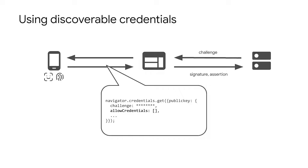To use discoverable credentials, pass an empty allow credentials object on authentication. Earlier, I mentioned you need to pass a list of credential IDs on authentication. As the server cannot predict which authenticator the user will use, you have to send all possible credential IDs. With discoverable credentials, the user can proactively choose the credential that is most suitable to sign in with WebAuthn. This allows the authenticator to create a signature with the private key.